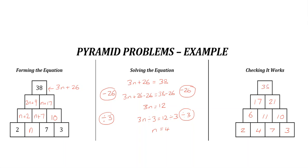17 and 21 is 38, which is the number we had in the first place. So we know that this is right, and our missing number was indeed 4.